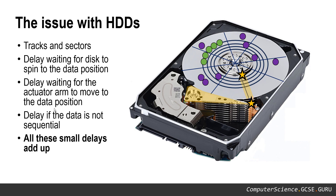In the diagram, the green circles represent a data file on a single track. Once the actuator arm moves to the right location, we can access that data quickly as the disc spins. However, if your data is fragmented and split across several sectors on several tracks, it's more problematic — the hard drive must gather that data and you may have to wait for the disc to spin multiple times and the arm to move across. Those delays do add up over time.